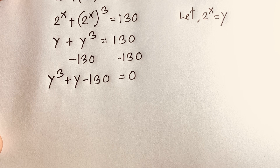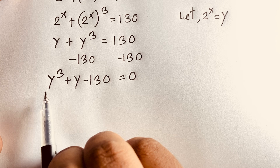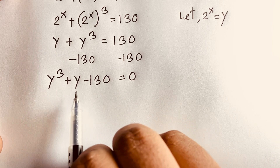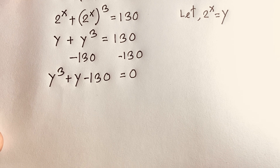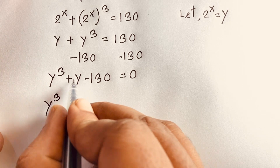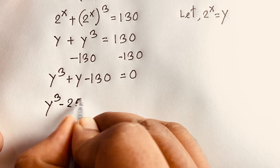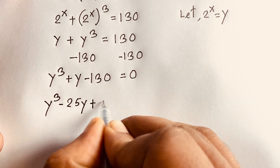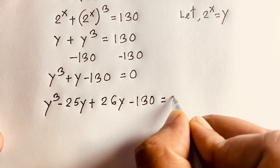Now, if you want to find out the roots, you can try y = 5. So 5 to the power 3 is 125, plus 5, it will be 130. So left hand side and right hand side are equal. But I solve this as this method: y³ and this positive y, so I consider it will be minus 25y plus 26y minus 130 equals 0.